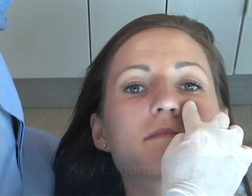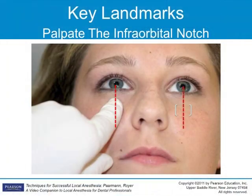Palpate the foramen extraorally. The patient may feel pressure of the finger on the nerve compressing on the bone. Typically, the foramen is located directly below the pupil of the eye as the patient looks straight ahead.